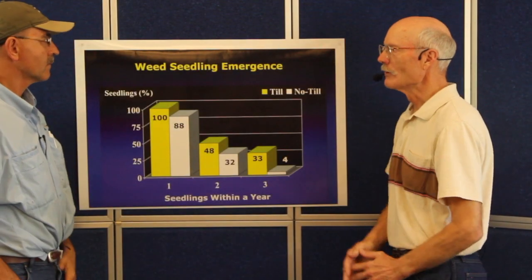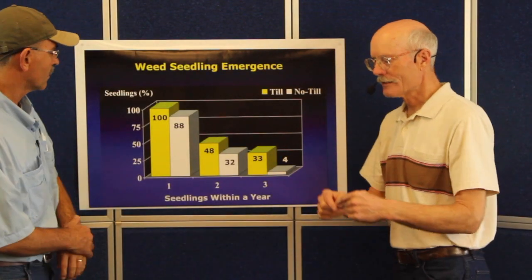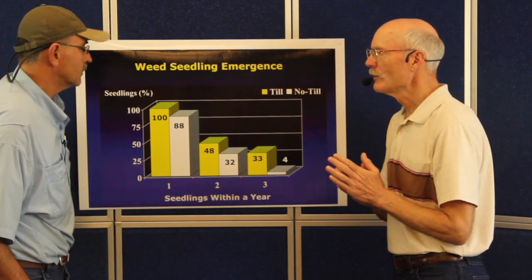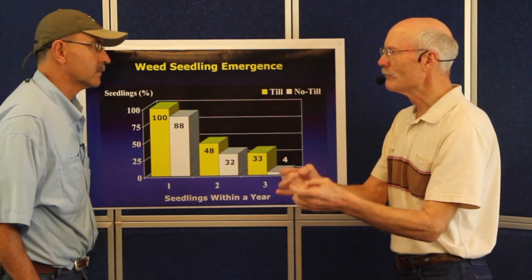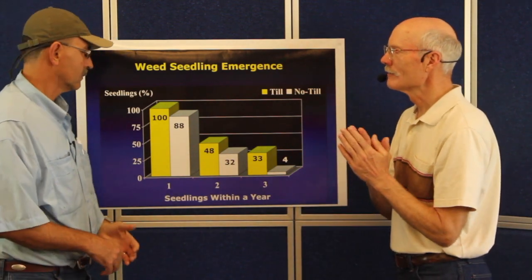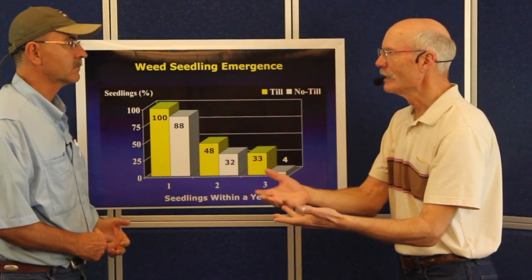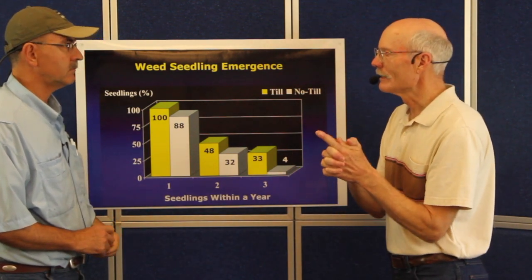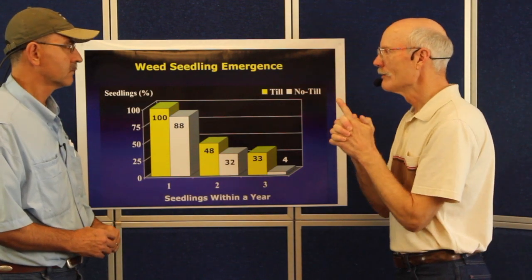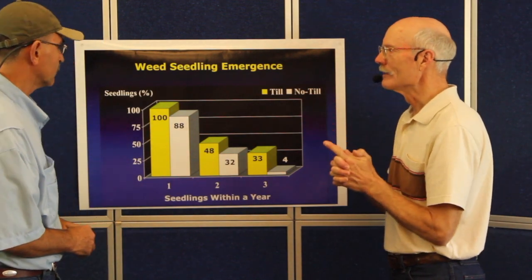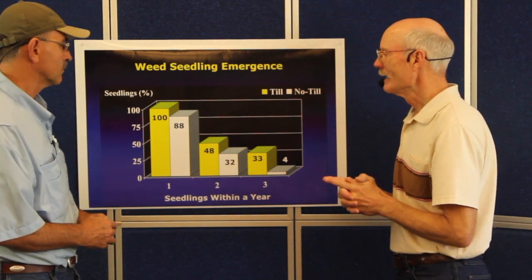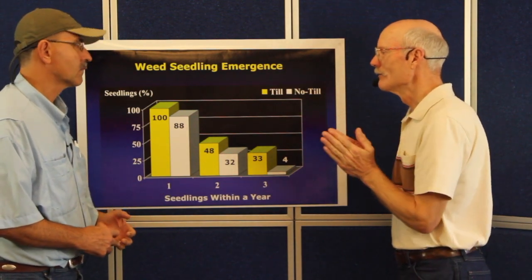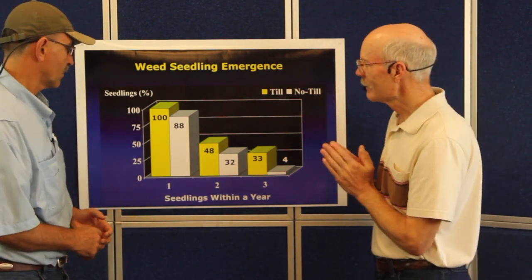In this study, we established quadrats. We went out and counted the seedlings every week. After counting, we would pull the seedlings and then allow the new seedlings to come. We counted these quadrats every week of the growing season for three years, and that gave us a sense of the trend that occurs when we compare no-till versus till.